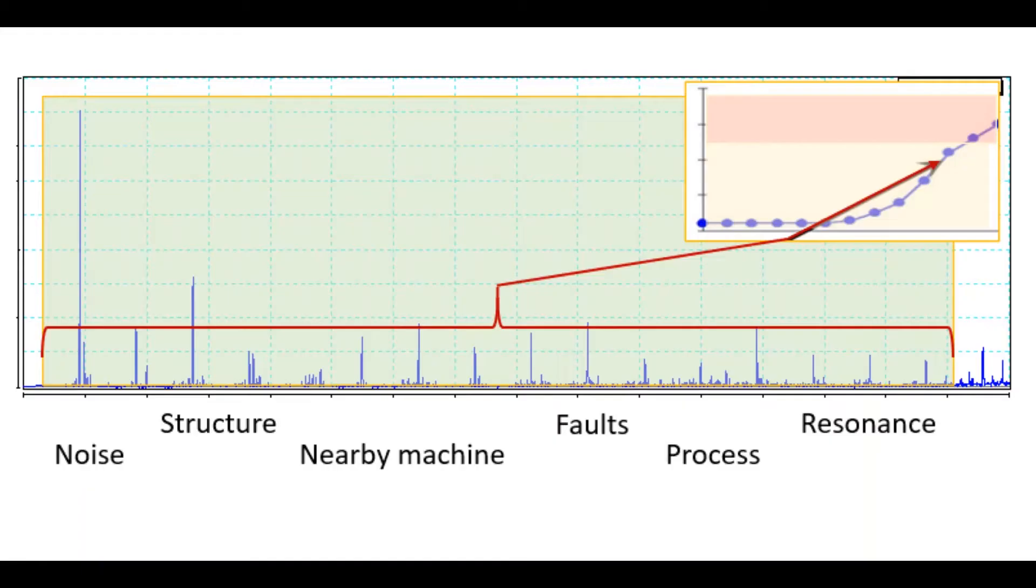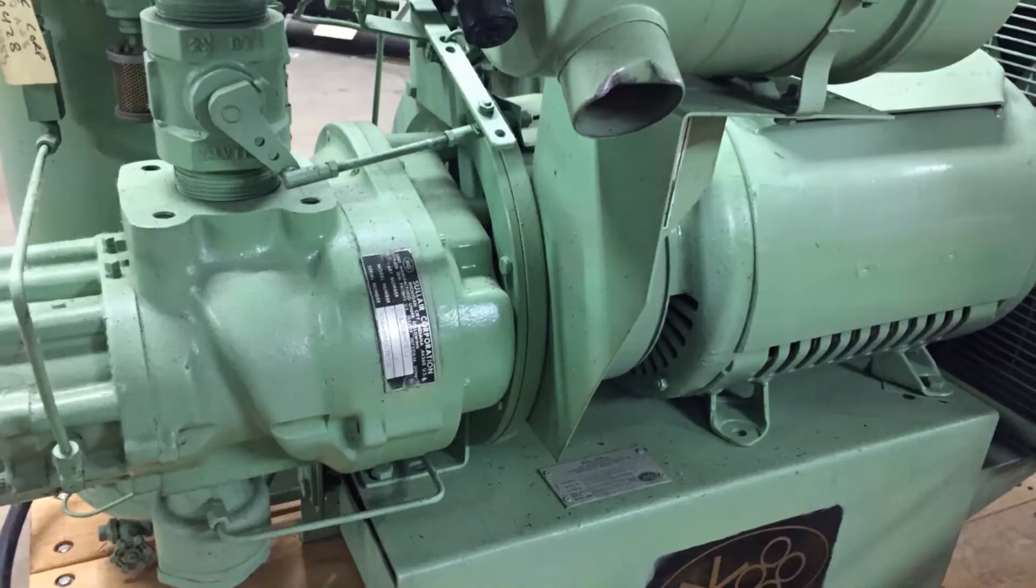The broadband alarms used in vibration screening provide a simple number which is easy to trend, but it combines all the vibration signals from all sources. It could be a fault, but it could also be something else. This means that further testing is needed.